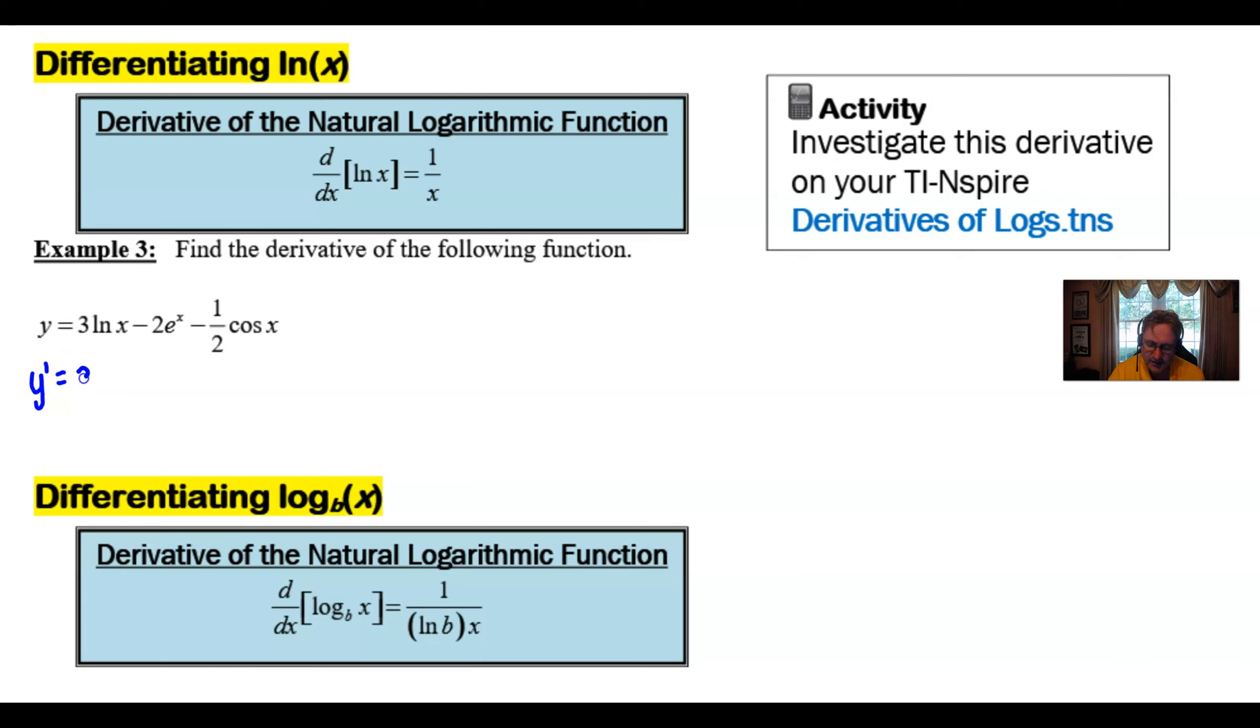So y prime is equal to, well, you see that 3, you can just plop it straight down because it is a constant after all. The derivative of the natural log of x is 1 over x. That's our new thing that we just learned. Drop down our minus and our 2. The derivative of e to the x is e to the x. And the only thing that we have left to do is drop down this 1 half. Take the derivative of cosine. That's going to be negative sine of x. And then we have our correct answer. We could clean this up if we wanted to. We could write this as 3 over x. Can't do much to the 2 e to the x. And then a double negative can be a positive there. And that would suffice as our derivative in probably the best, most simplified form.